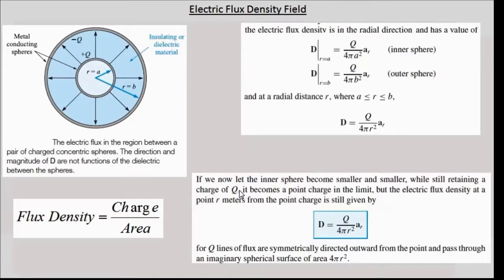If we now make the inner sphere small, extremely small, while still having the same charge, it becomes a point. But in spite of that, the D, or the displacement field, or the electric flux density field, at a distance r, would still have the same value. Even when the inner sphere is made a point charge, but carrying a charge equal to q.